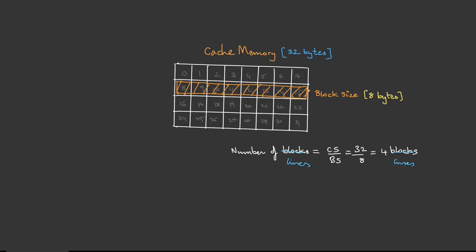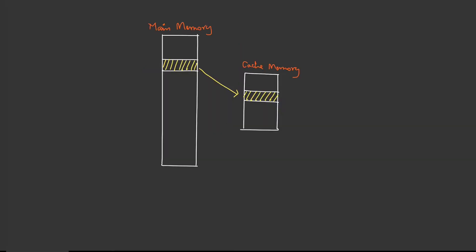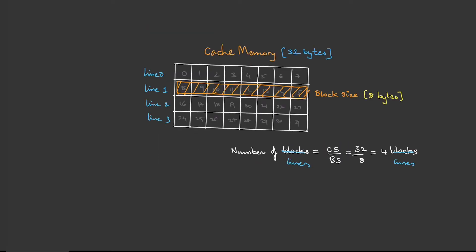So we have four lines: line 0, line 1, line 2, and line 3. One important thing to note: in main memory we call them blocks, and in cache we call them lines. The size of a block is equal to the size of a line, so the block is eight bytes and the line is also eight bytes.